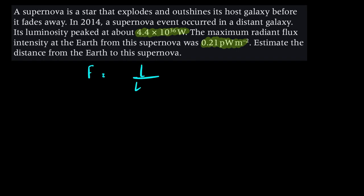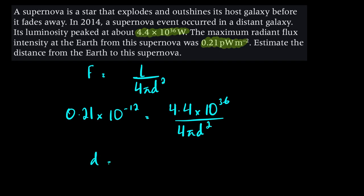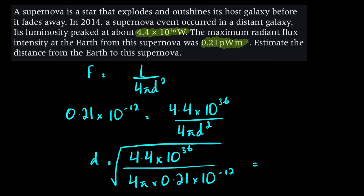Estimate the distance. What we would simply do is use this formula again: F = L/(4πd²). So F, the radiant flux intensity, is 0.21 pico - pico is 10⁻¹². L is 4.4×10³⁶/(4πd²). You can rearrange this equation to find d. This would be 4.4×10³⁶/(4π × 0.21×10⁻¹²), and this would also be under the root. From here, you can calculate d. This turns out to be 1.29×10²⁴, so to 2 significant figures, this would be 1.3×10²⁴ meters.